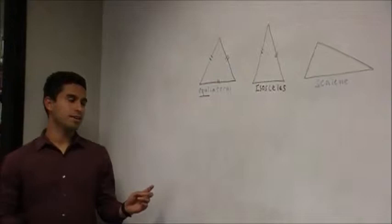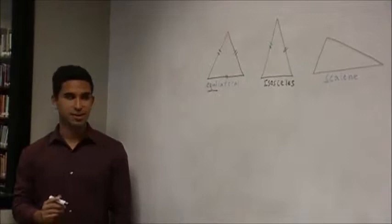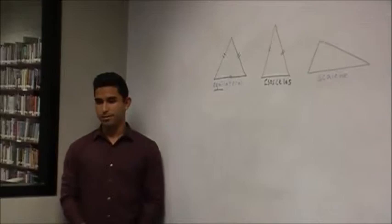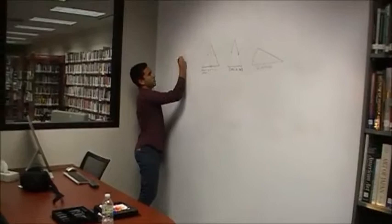Okay, so stepping back, if an equilateral triangle has all three angles that are equal, and we just said that every triangle's angles add up to 180 degrees, can anyone tell me what are the angle measurements of an equilateral triangle? Hunter. 60 degrees. Exactly.